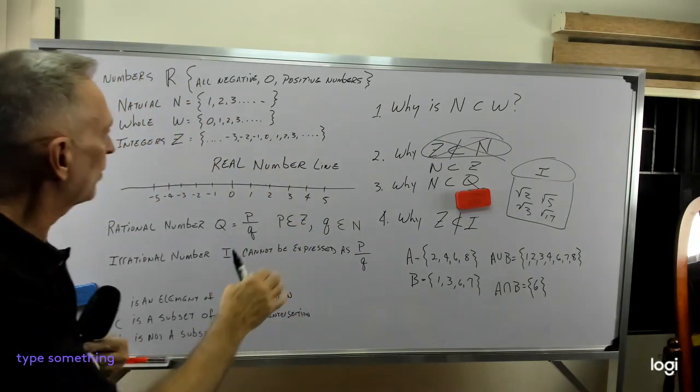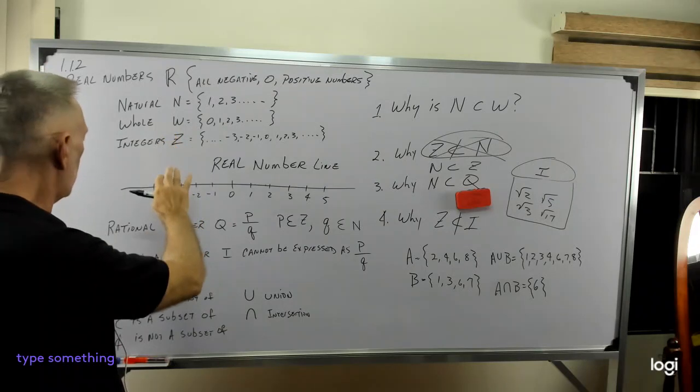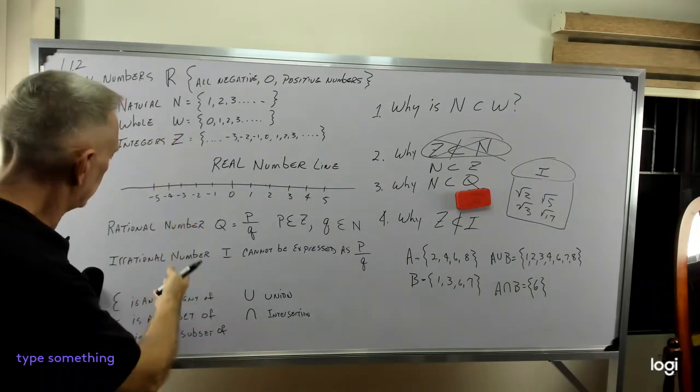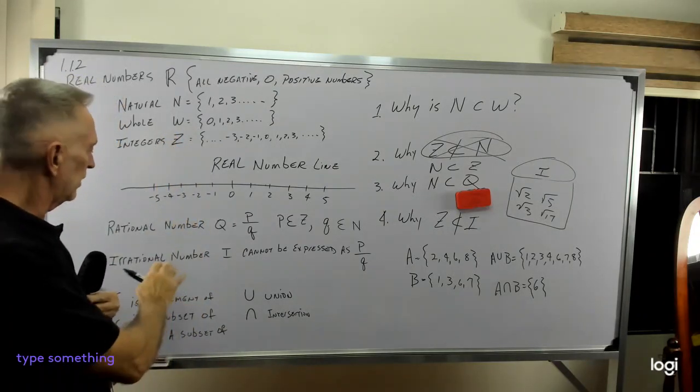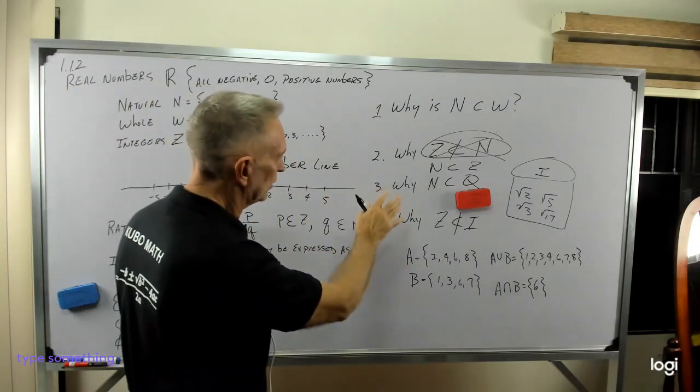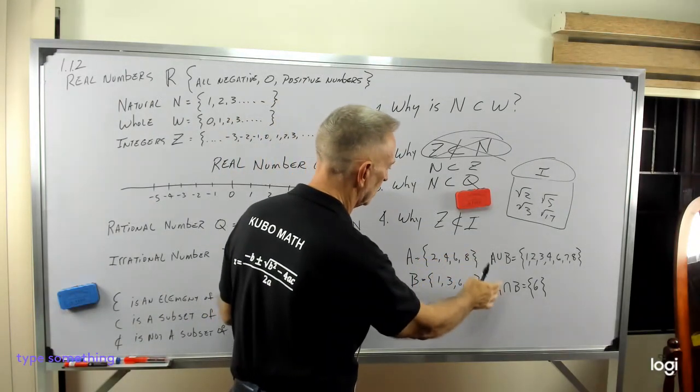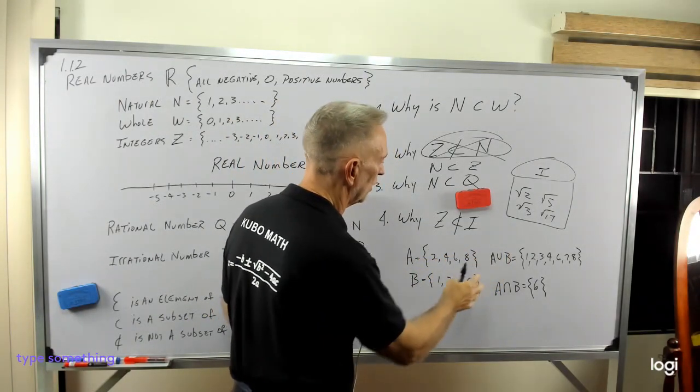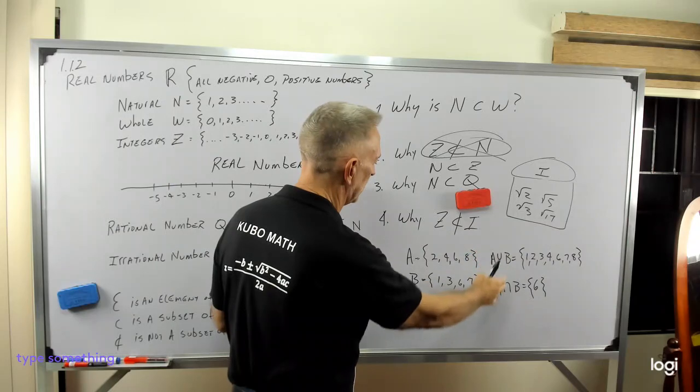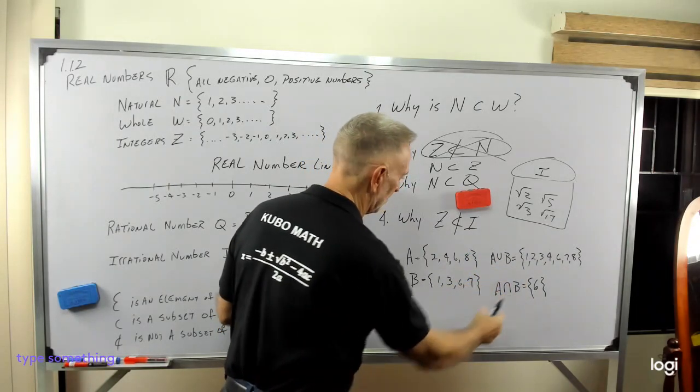So this is just an example of real numbers, the real number line, natural, whole, and integers, rational, irrational numbers, and then how those interact into sets, and then looking at the intersection or union of those sets, A or B, or together, or A and B.